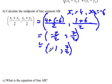And if you think about it, going back to these values, halfway between 4 and negative 6 is negative 1. And halfway between 1 and 6 is 7 over 2, which is 3 and a half.